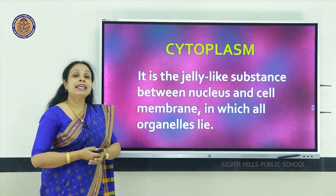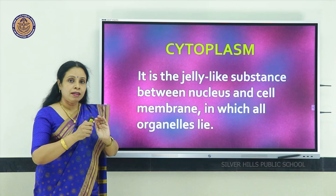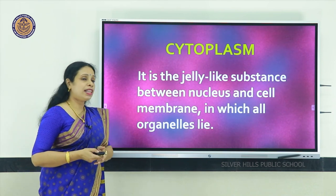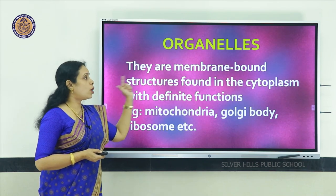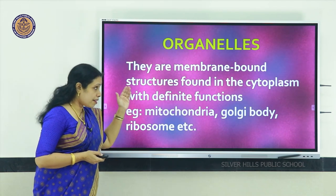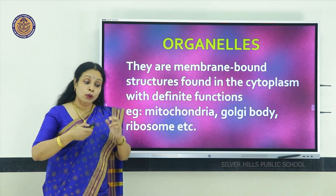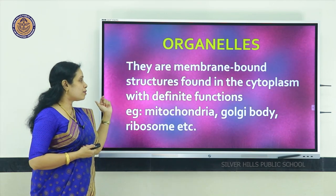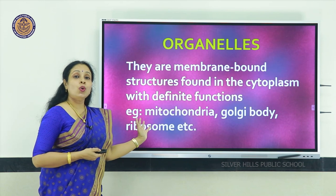Next is cytoplasm — a jelly-like substance inside the cell membrane but outside the nucleus. It is here that all the cell organelles lie. Organelles are membrane-bound structures found in the cytoplasm of the cell; they have definite functions essential for the cell, and only if the cell performs them properly can we function as an organism. Examples of cell organelles are mitochondria, Golgi body, ribosome, etc.